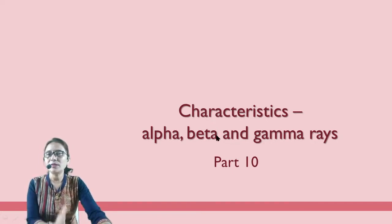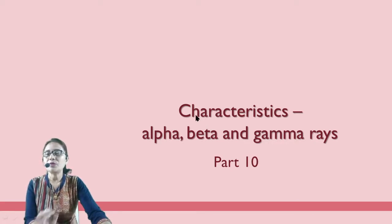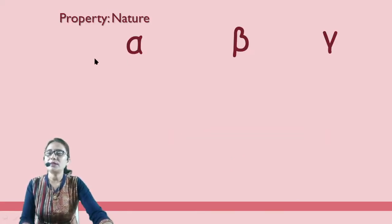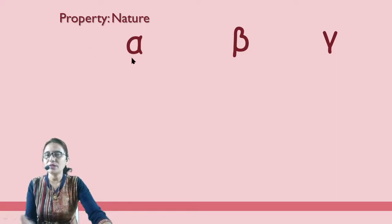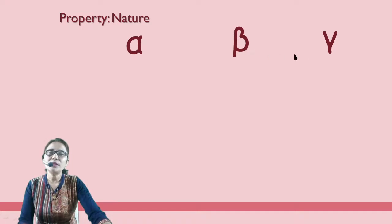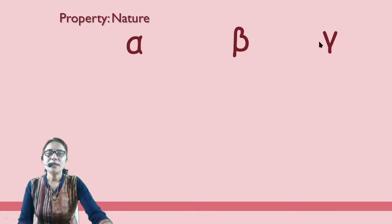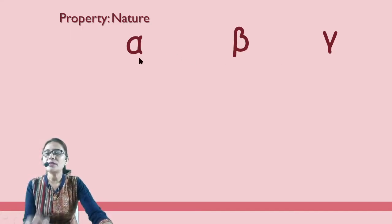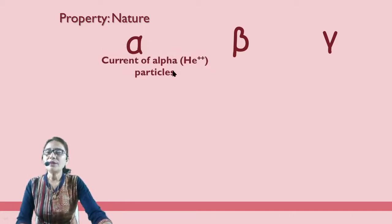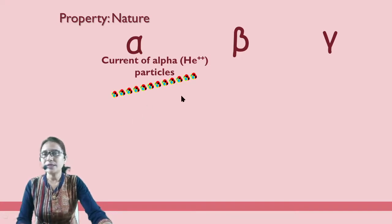So we are going to start with the characteristics, which means properties. First one is nature — nature is how it is. These are the symbols of alpha particle, beta particle, and gamma rays. First, we will see the nature of alpha particle.